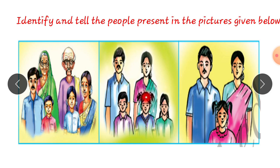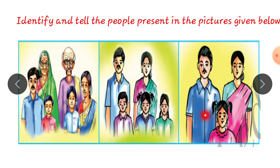In the second family there are five members: Father, Mother, and they have three children — one son and two daughters. In the third family there are three members: Father, Mother, and one daughter.